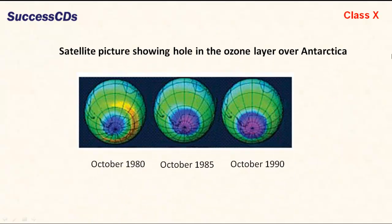Satellite pictures show the hole in the ozone layer over Antarctica. These images are from October 1980, October 1985, and October 1990.